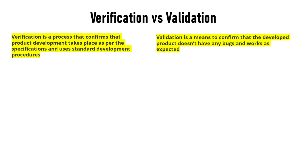Whereas validation means confirming that the developed product has no bugs and is working as expected — that is essentially testing. So in verification you develop something, and in validation you test that developed code or developed product.